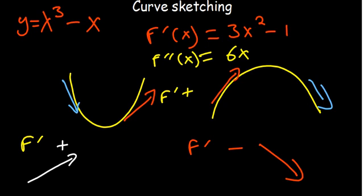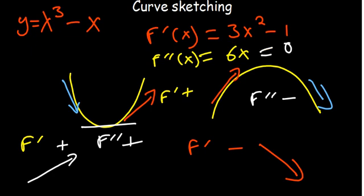When the second derivative is positive it's a minimum; when it's negative it's a maximum. A case where it equals zero is a point of inflection. A point of inflection is where one part is part of the maximum and another part is part of the minimum — that transition point is what you call a point of inflection.